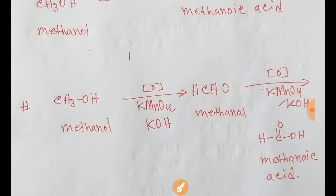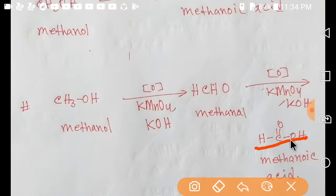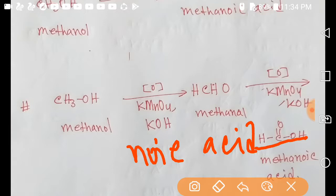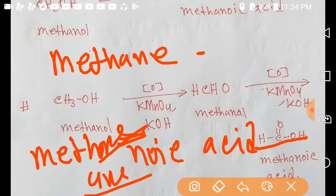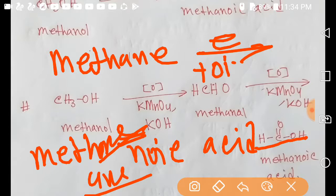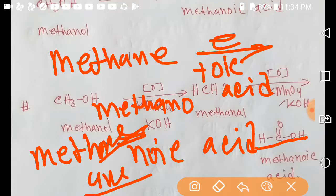For methanoic acid, we take methane, remove the 'e', and add 'oic acid', giving methanoic acid. Thank you for viewing this video.